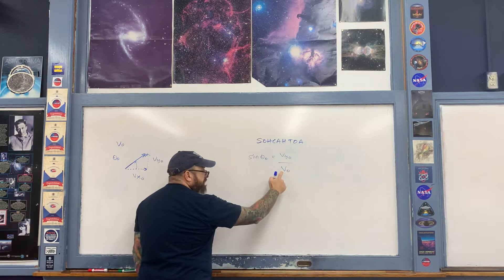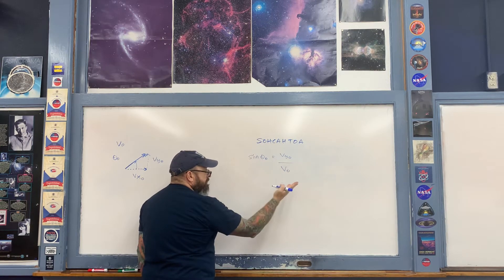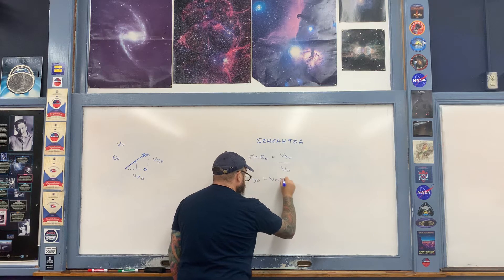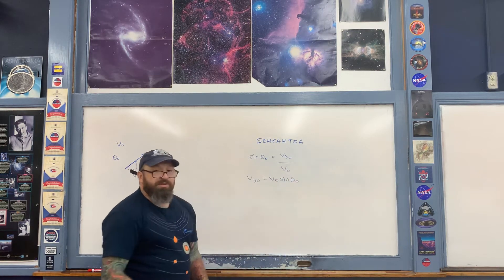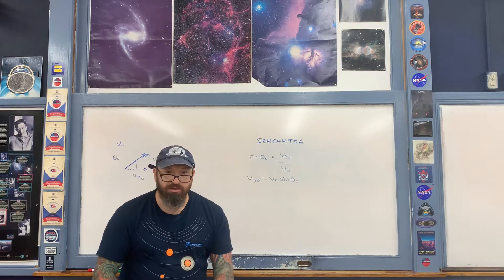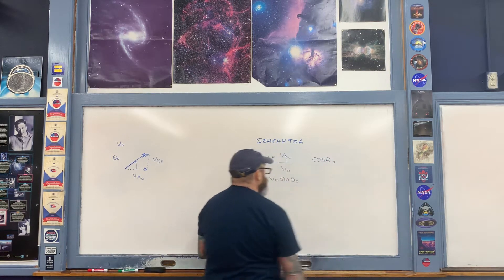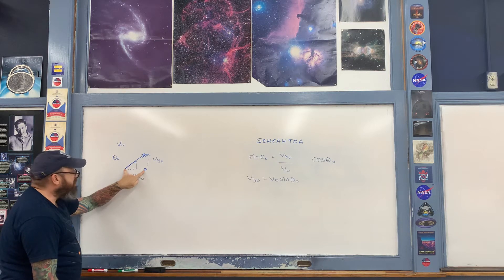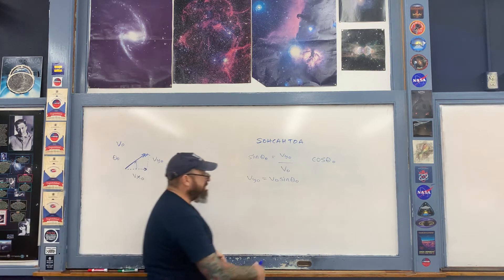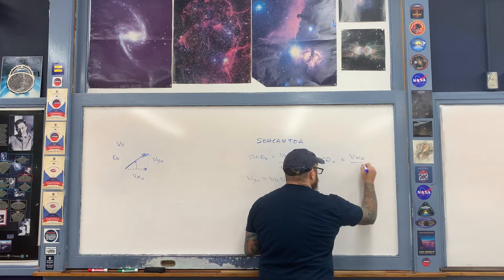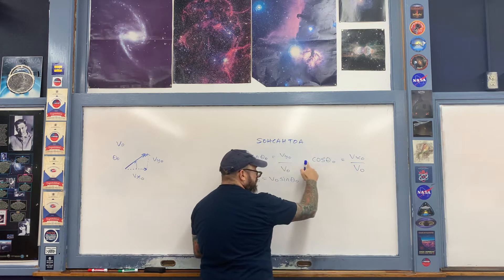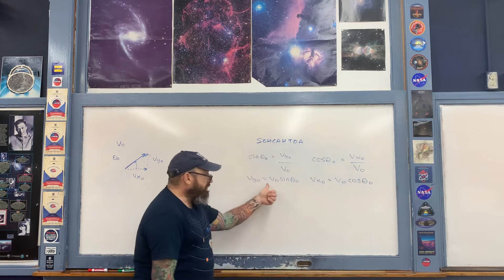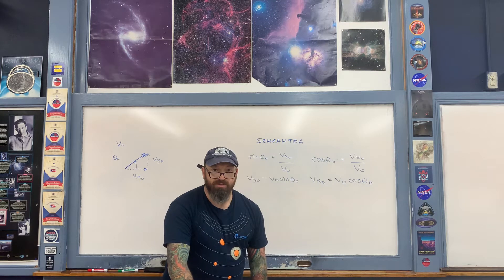Cross-multiplying v naught to the other side gives a simple equation for the initial vertical velocity: vy naught = v naught times sine of theta naught. Then horizontally, the cosine of theta naught equals the adjacent side vx naught divided by the hypotenuse v naught. Cross-multiplying gives vx naught = v naught times cosine of theta naught. We'll need these two trigonometric formulas as we proceed through the kinematics description.